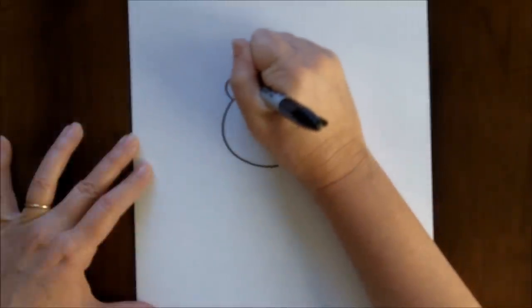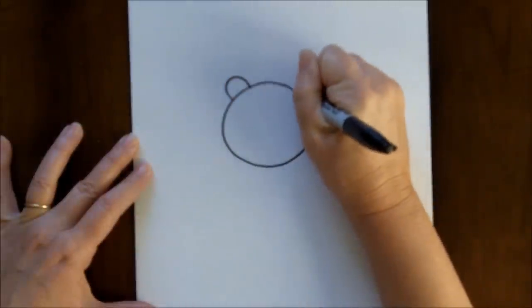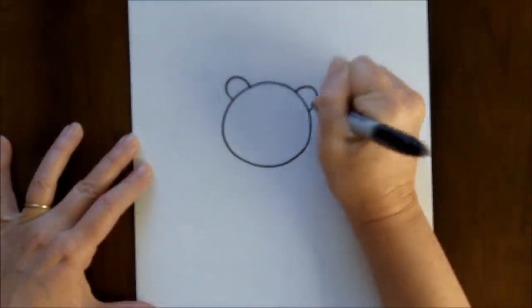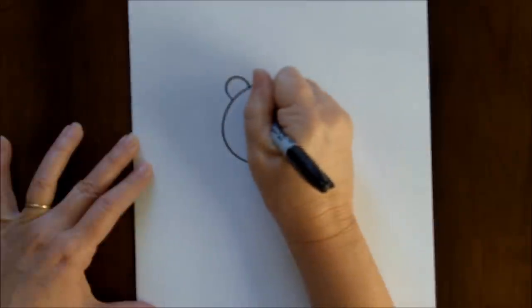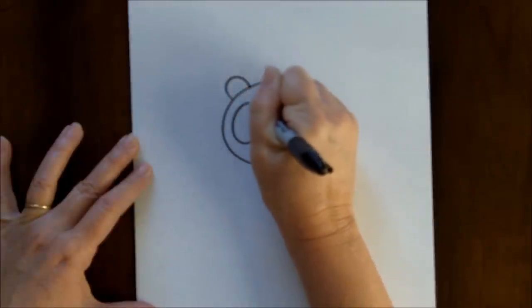put some ears, which are basically just upside-down U's. And then inside the circle, you're going to make two large